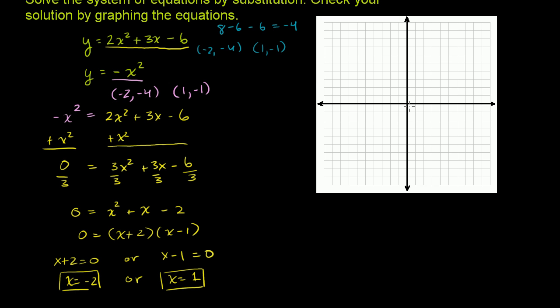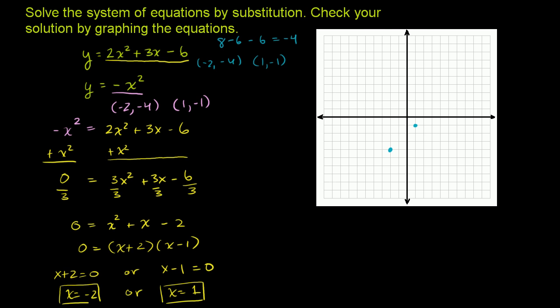So we can plot these points: negative 2, negative 4 is a point of intersection, and 1, negative 1 is also a point of intersection. Now let's graph and verify. This first one — y equals negative x squared — is pretty easy to graph. It's going to pass through the origin and be a downward opening parabola.